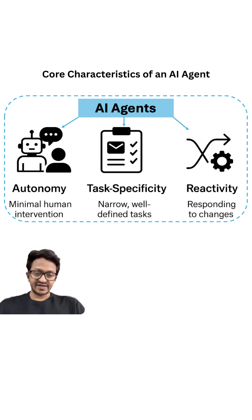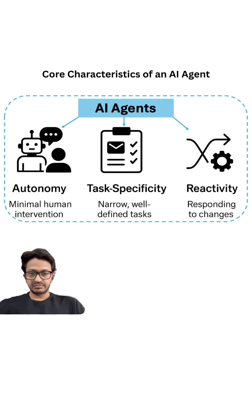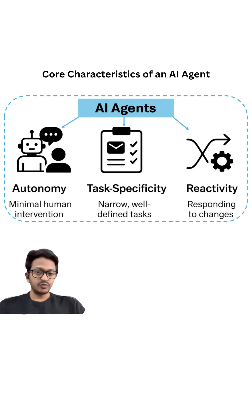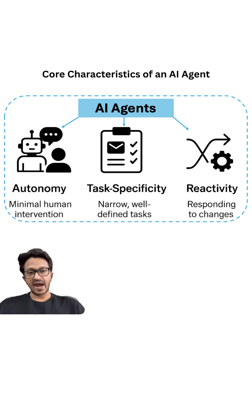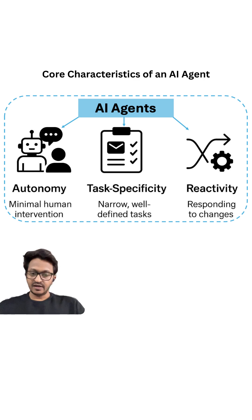The first is autonomy — all about minimal human intervention. That is why the name 'agent' comes in, which means the ability to act independently. That is what AI agents are known for. So autonomy is basically the first core characteristic of an AI agent.